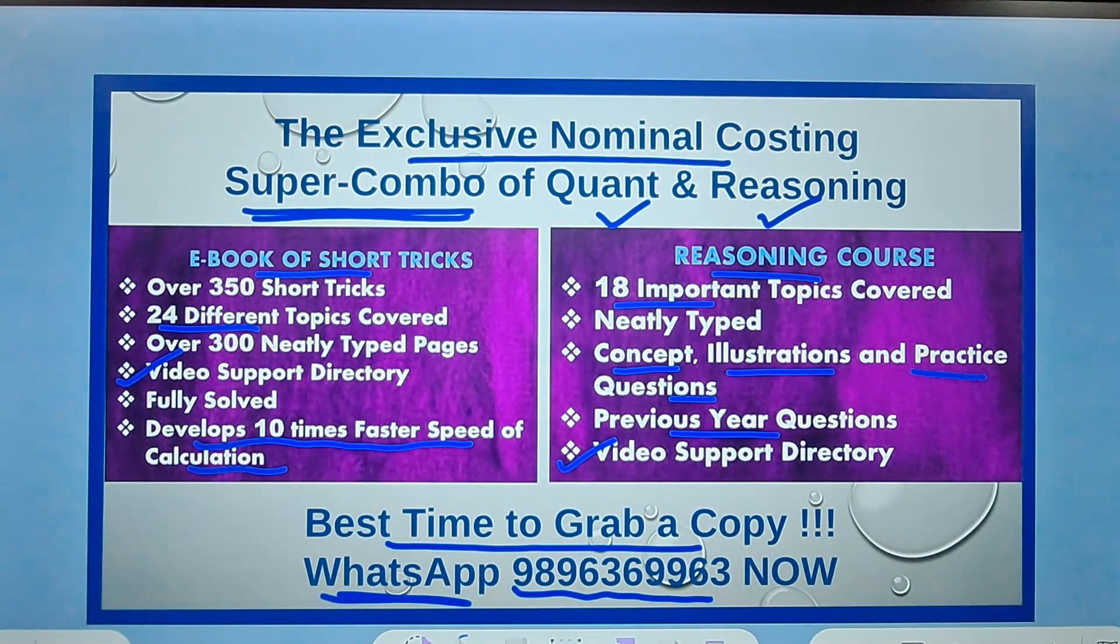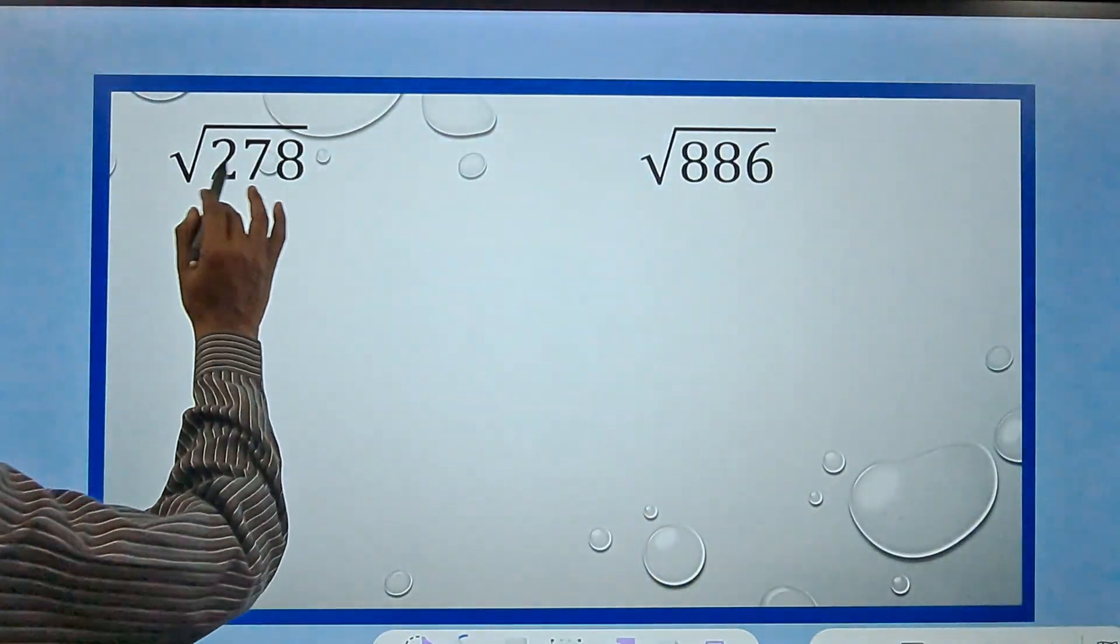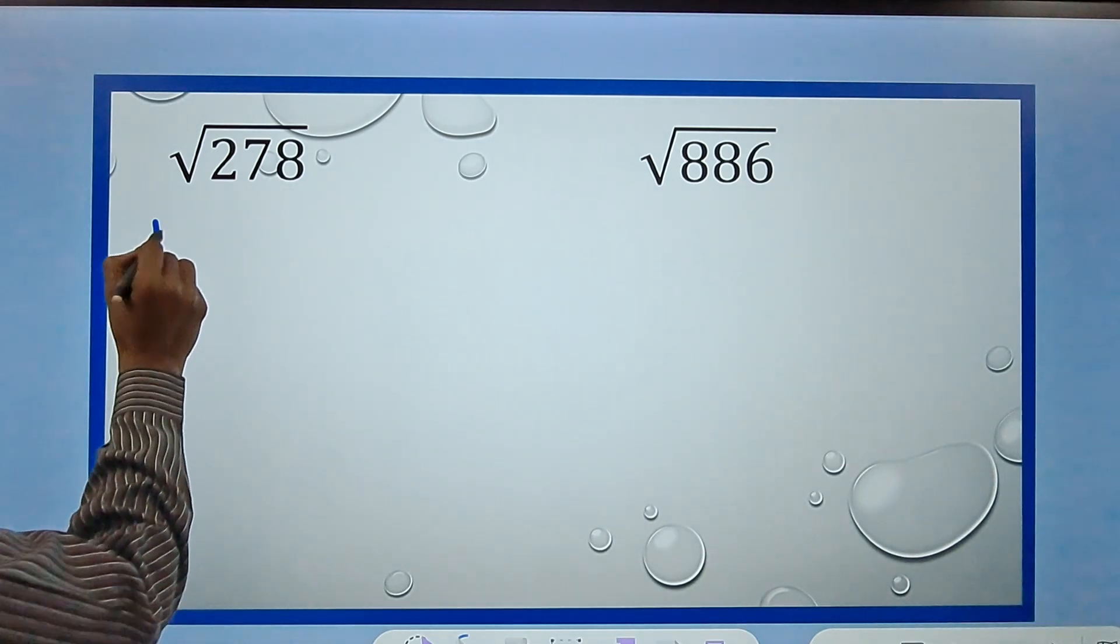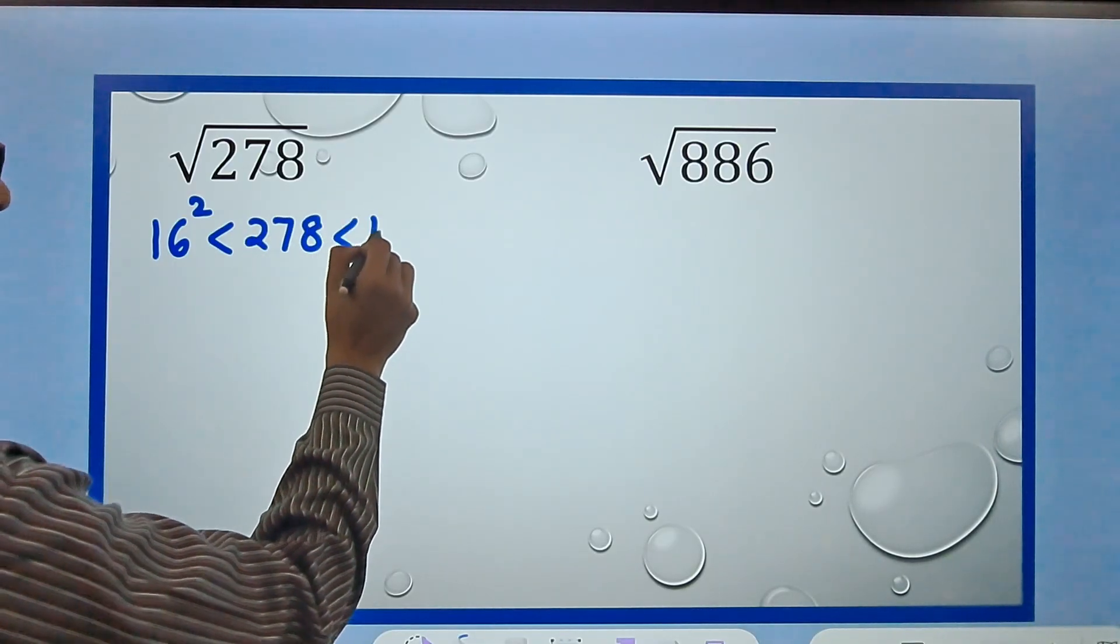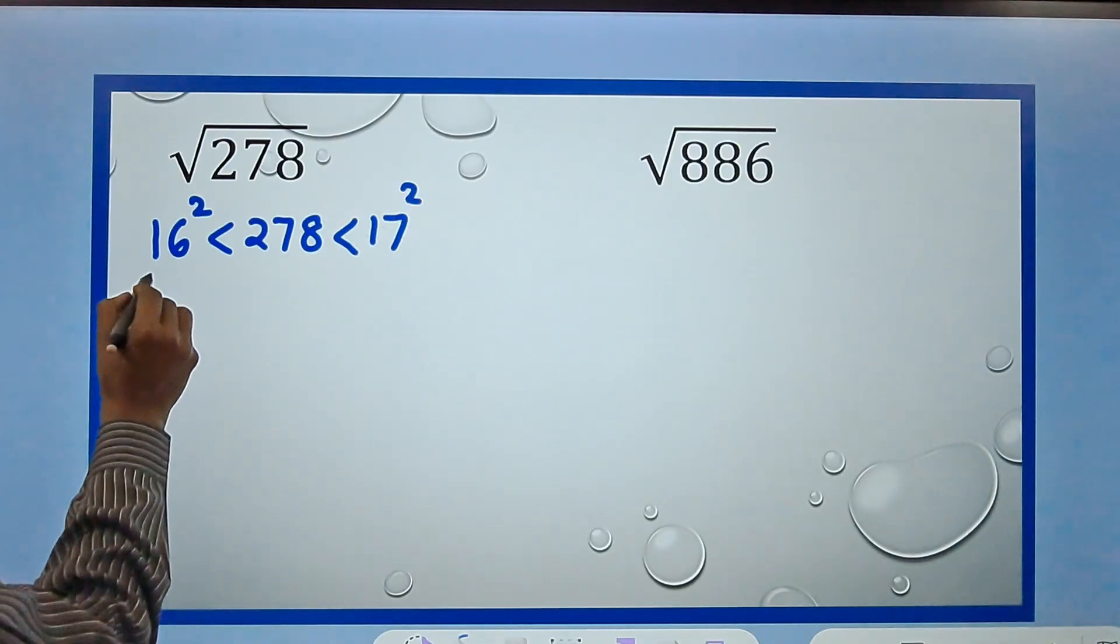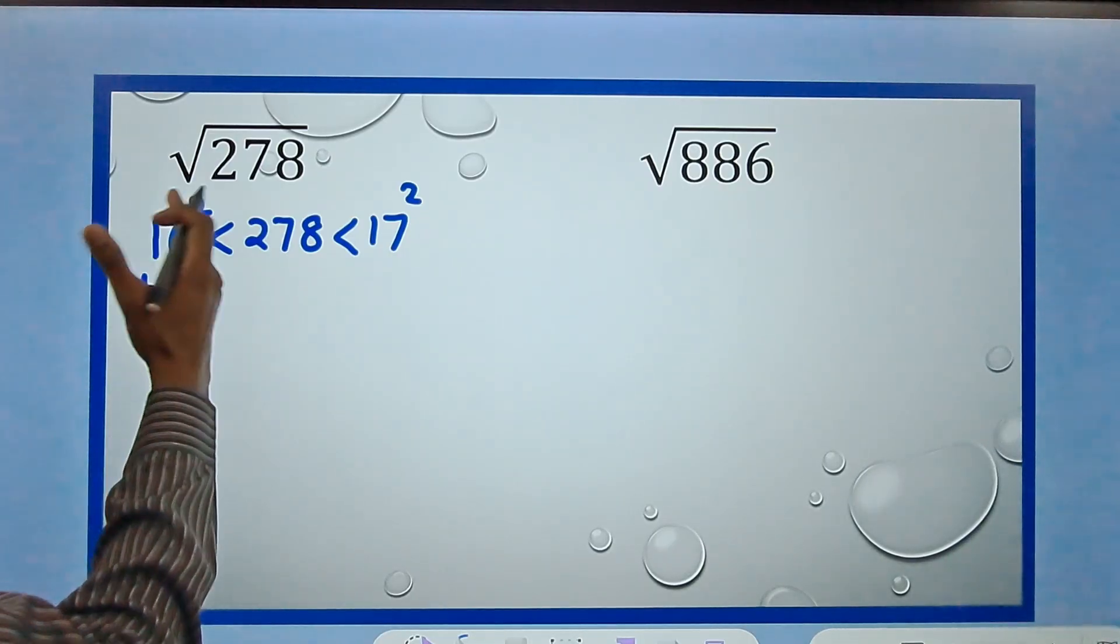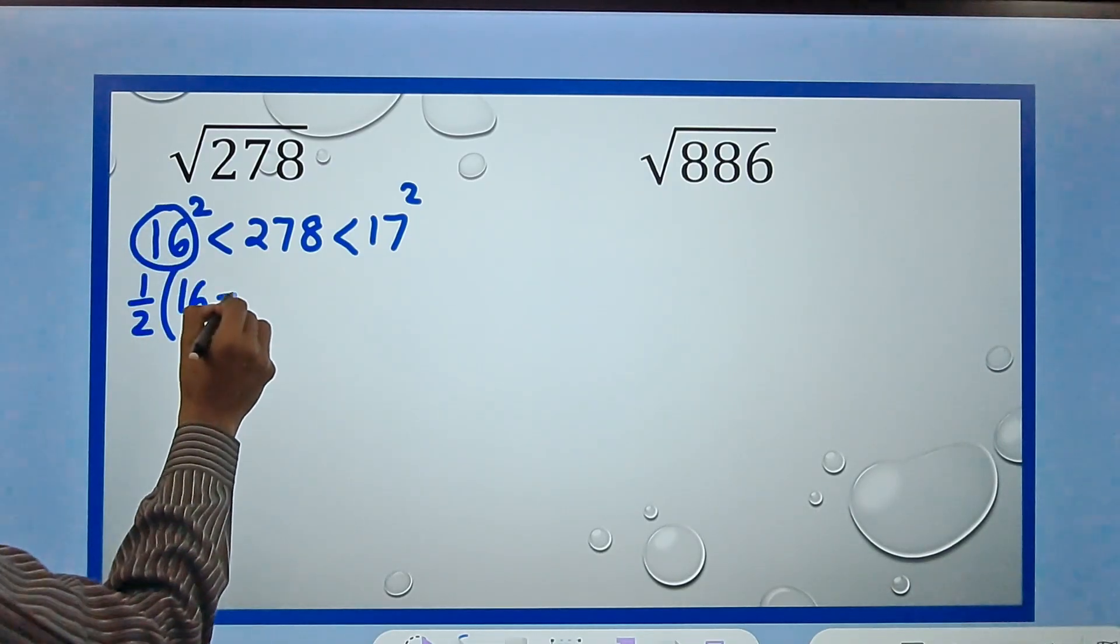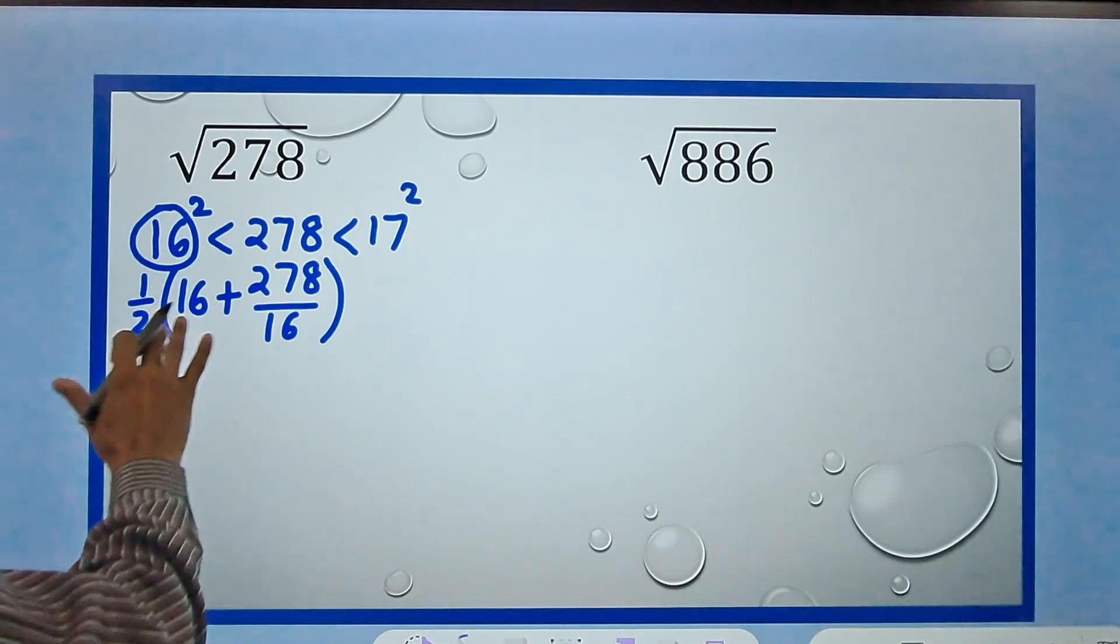Let's take some other examples now. Here we have square root of 278. Let's quickly do this. 278 - 16 square is 256, so 278 lies between 16 square and 17 square. If I find half of (a + b/a), a is this number 16, so 16 plus b is the number in the square root 278, and I have to divide that by 16.